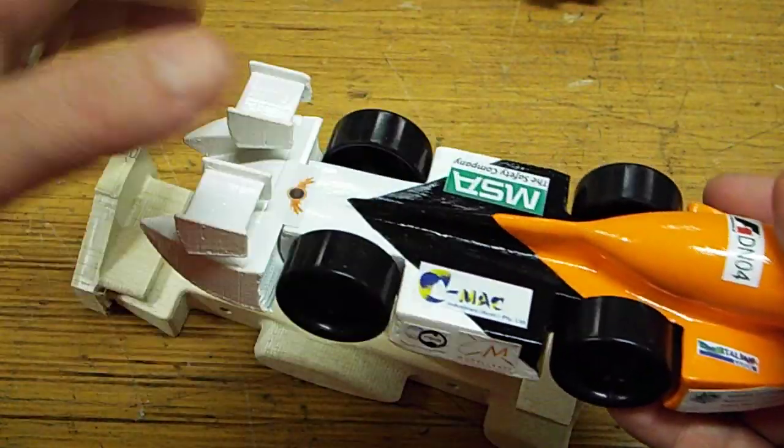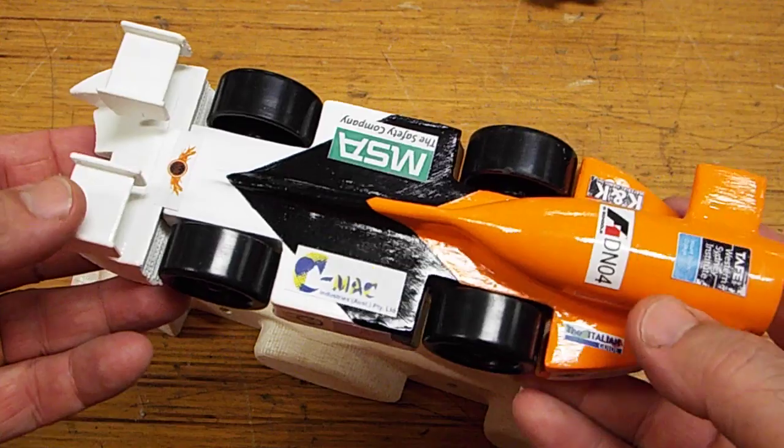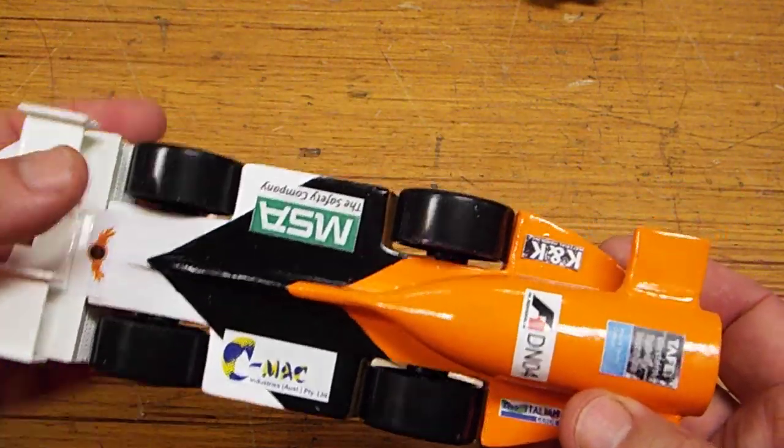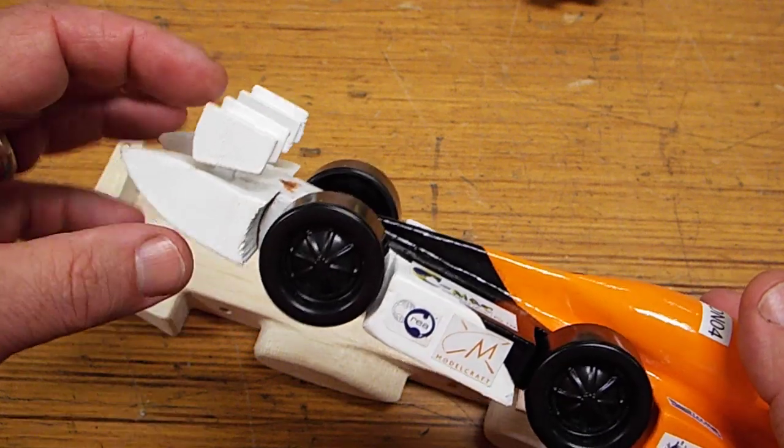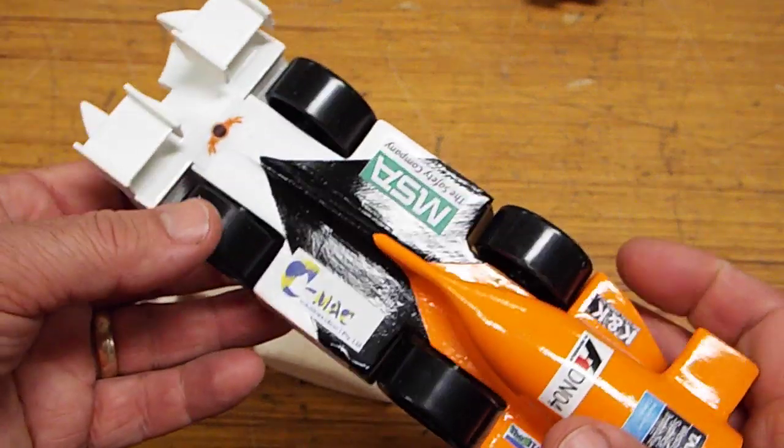The next class up is the development class, where you can, you still have to use the same wheels and the grommets, but you can modify the axle, use a different axle, and you can modify the front wing within certain restrictions.